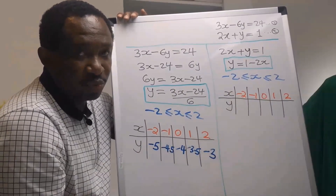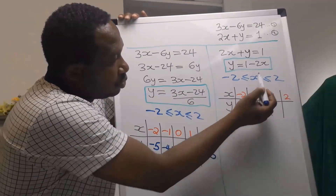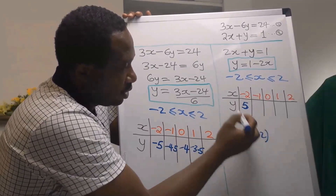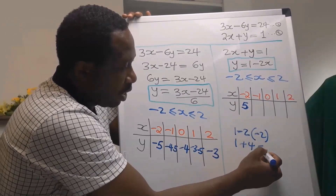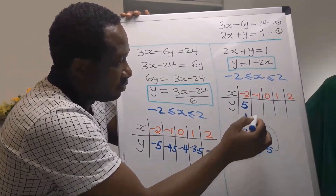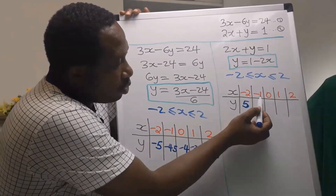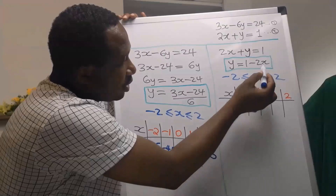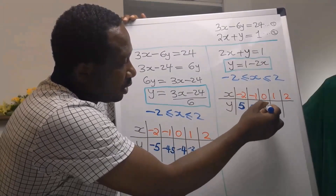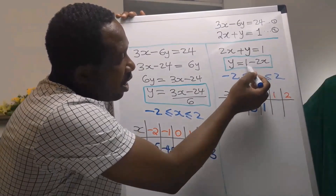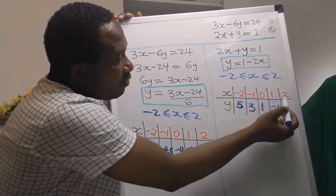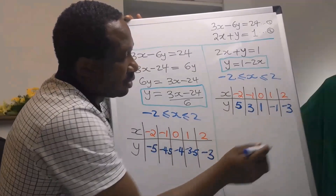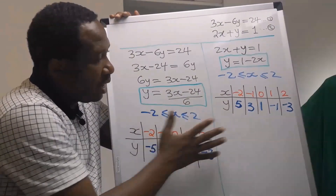For table 2, using y equals 1 minus 2x: when x is minus 2, 1 minus (minus 4) gives 5. When x is minus 1, y is 3. When x is 0, 2 times 0 is 0, so y is 1. When x is 1, y is minus 1. When x is 2, 2 times 2 is 4, and 1 minus 4 gives minus 3. Tables 1 and 2 are now complete.